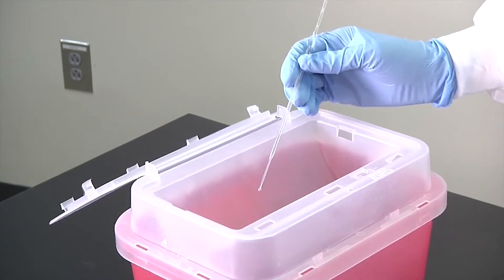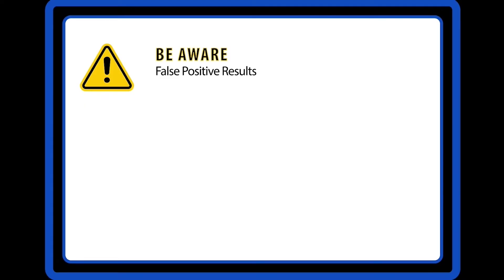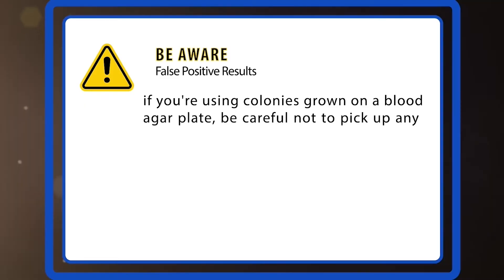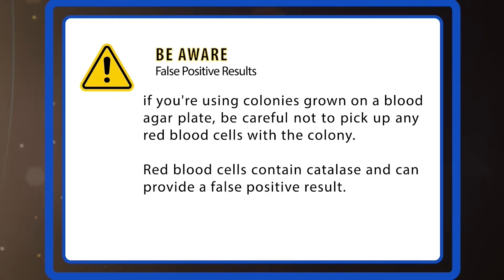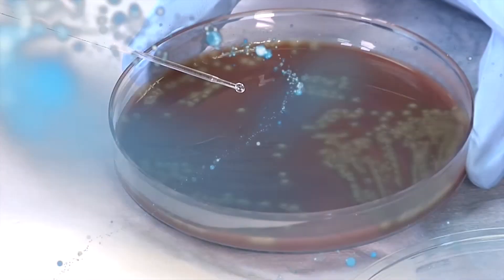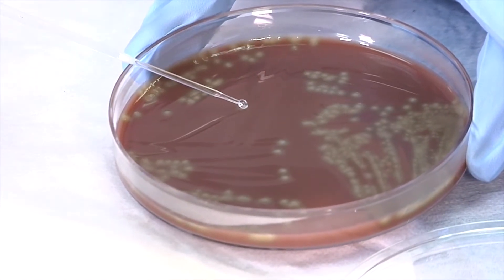Then discard the stick or loop into a sharps container. Remember, if you're using colonies grown on a blood agar plate, be careful not to pick up any red blood cells with the colony. Red blood cells contain catalase and can provide a false positive result. Repeat the process with your negative control.